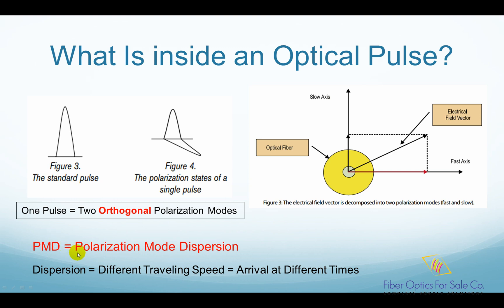PMD stands for polarization mode dispersion. Dispersion means different traveling speeds, which also means arrival at different times. So PMD means the different traveling speeds of two different polarization modes of a light pulse.